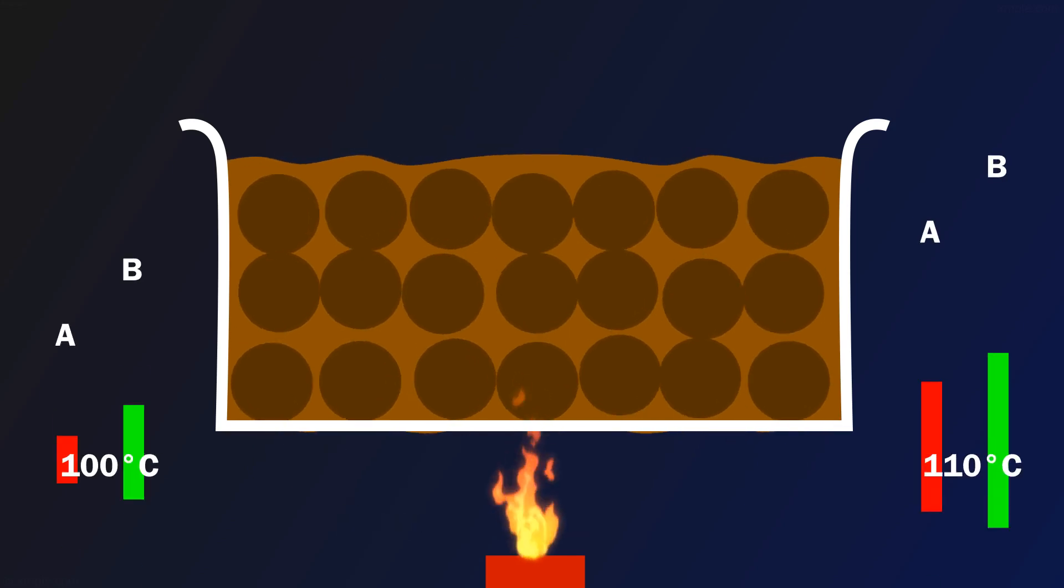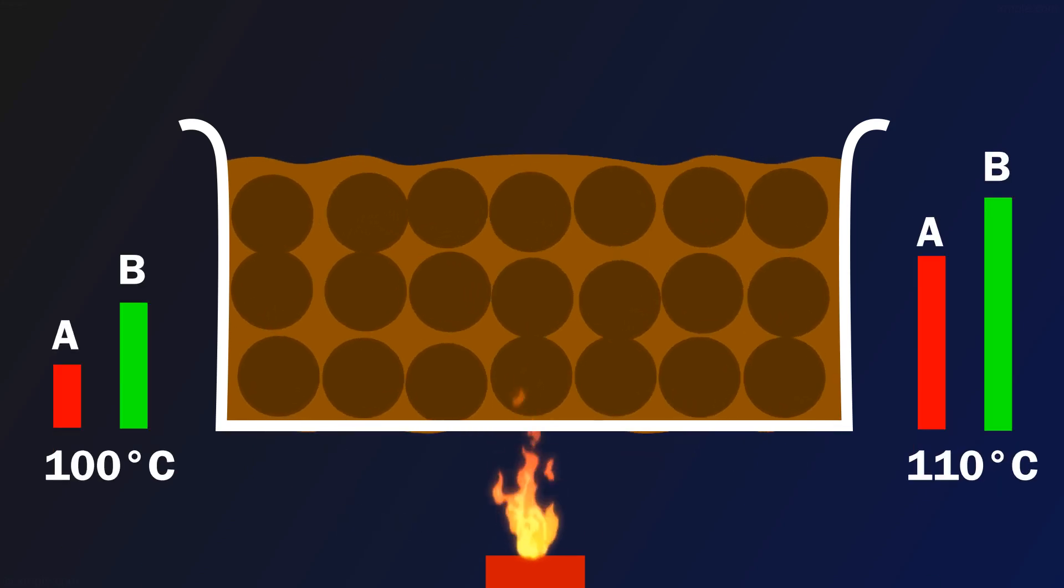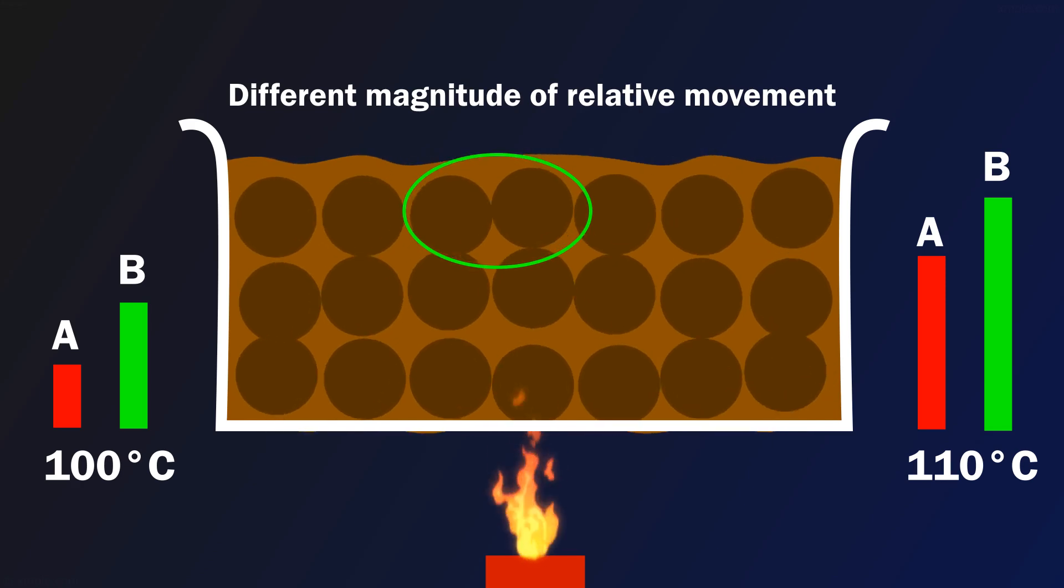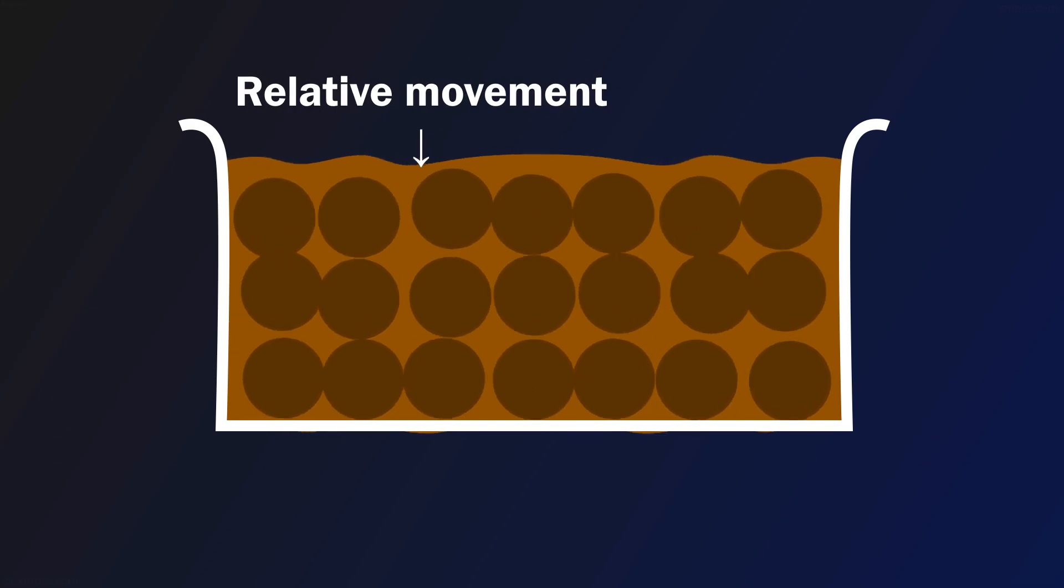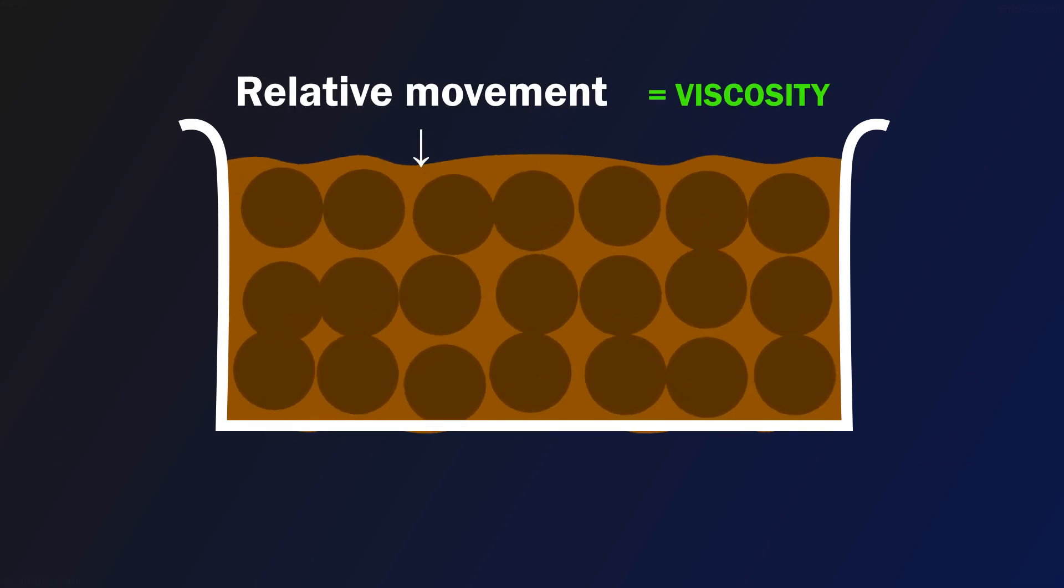For a given temperature, different liquids showcase different magnitudes of relative movement between molecules. This relative movement is measured in terms of a physical quantity called viscosity.